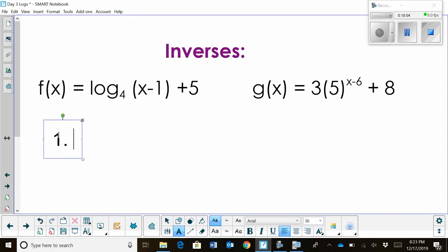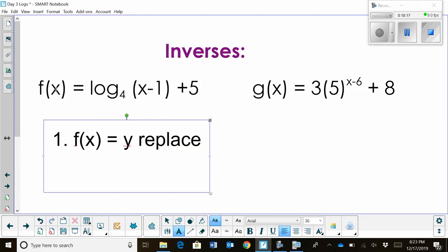The first thing you always do in an inverse is set your function notation. So if you have an f of x or g of x, replace it with a y. That's your first thing. So you just replace with y.